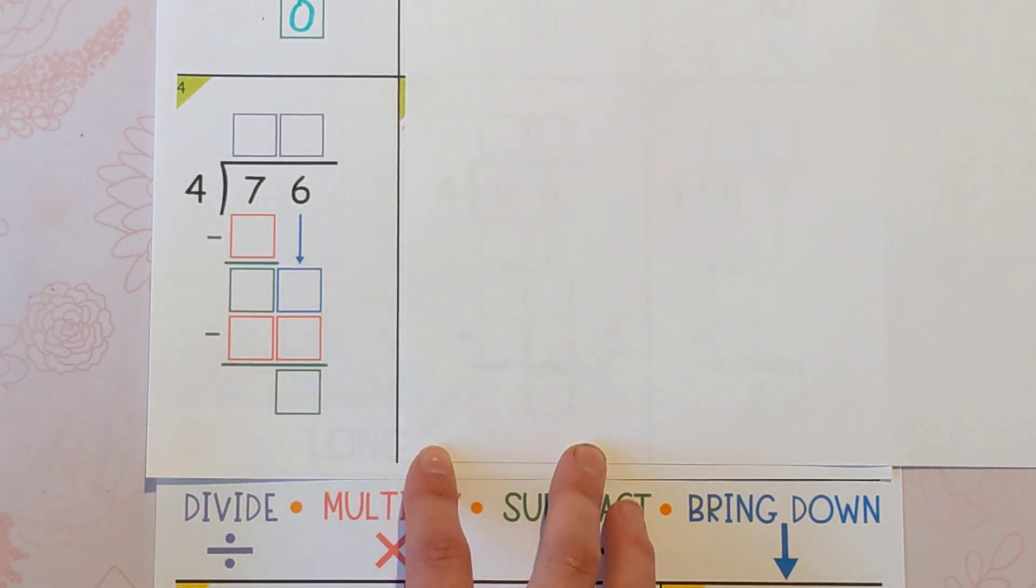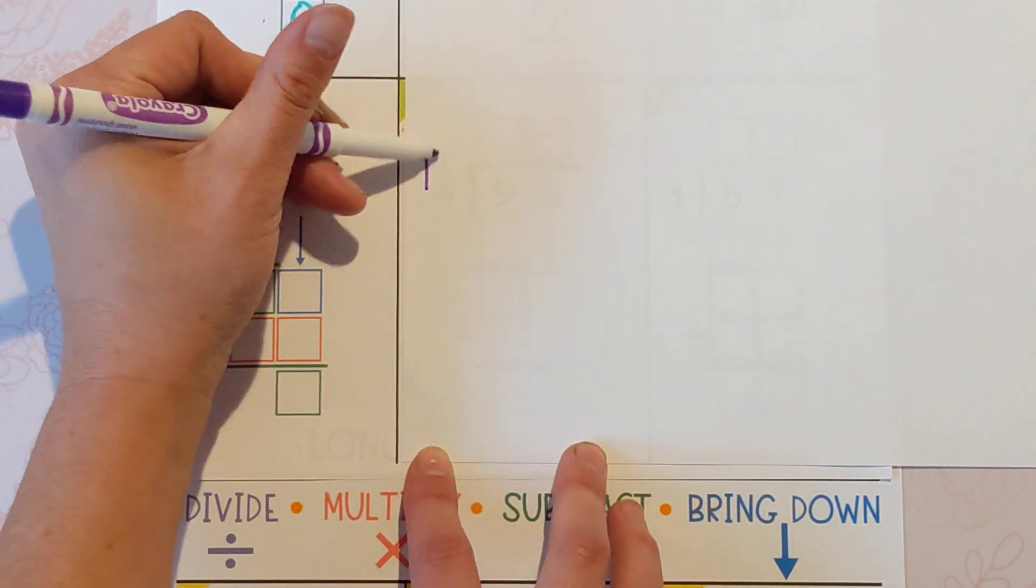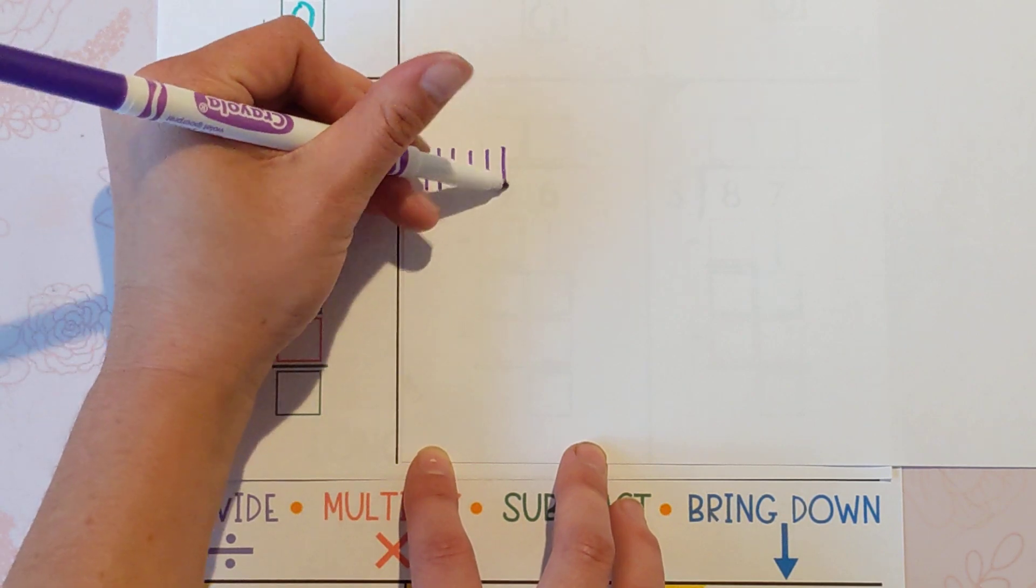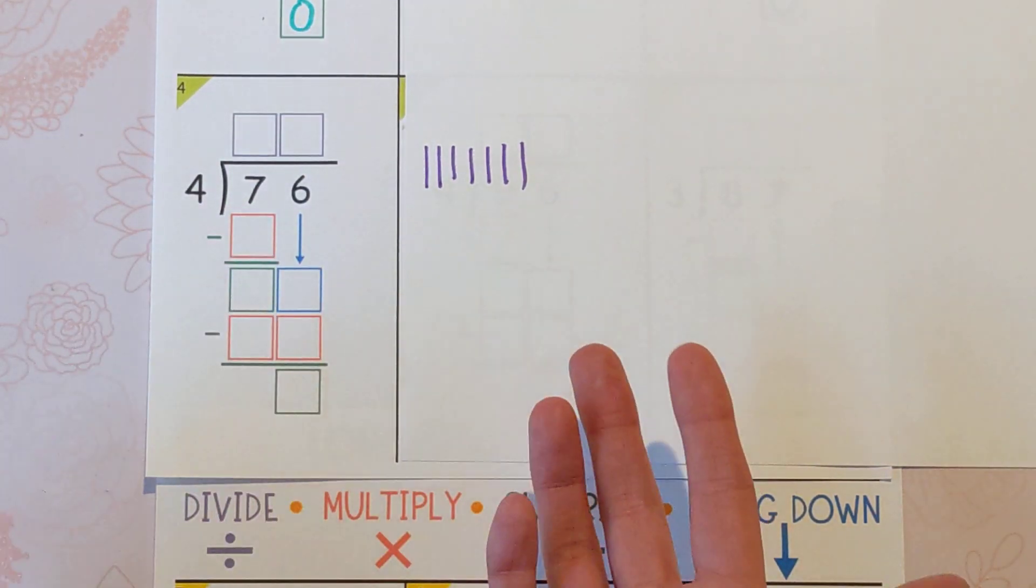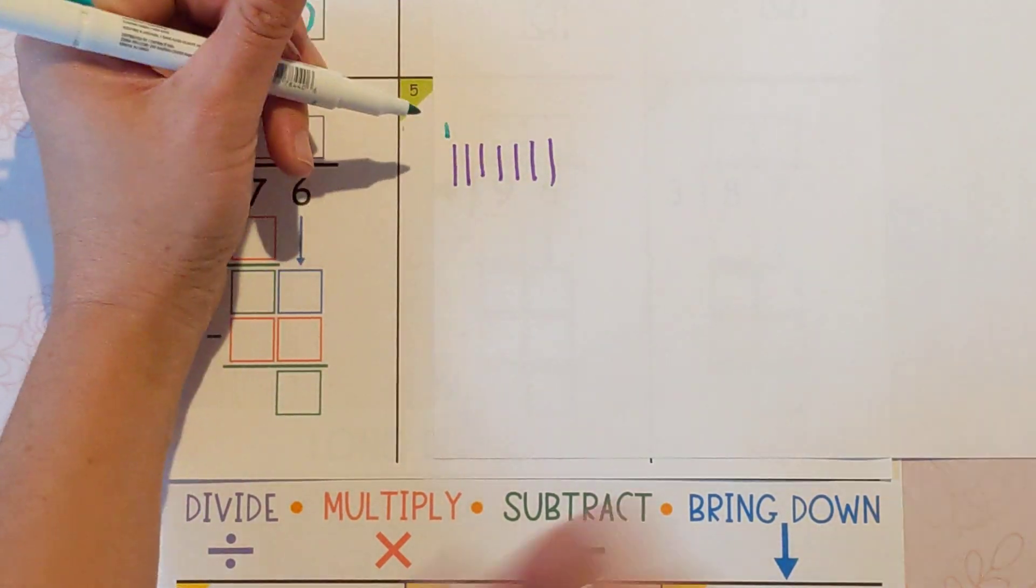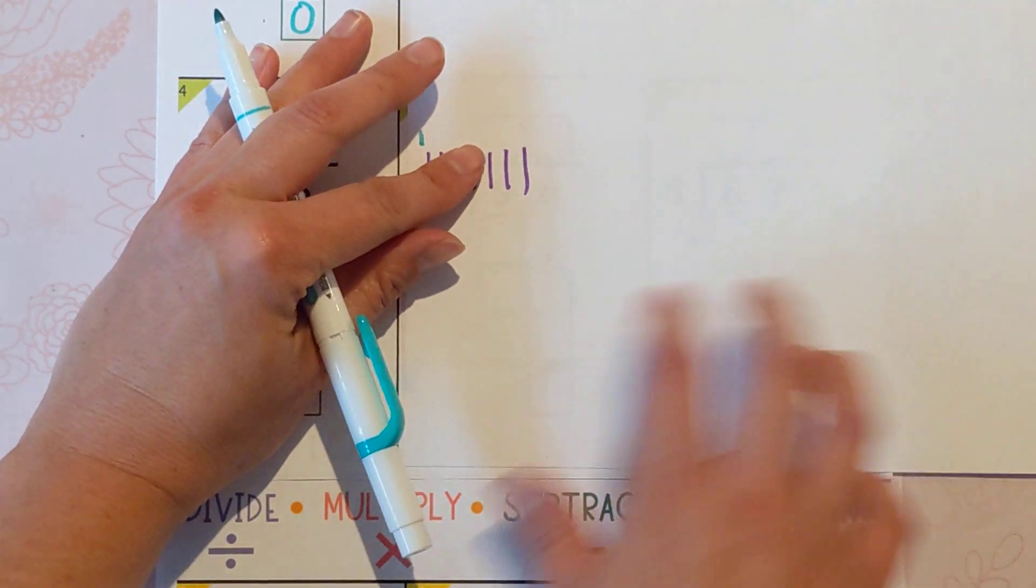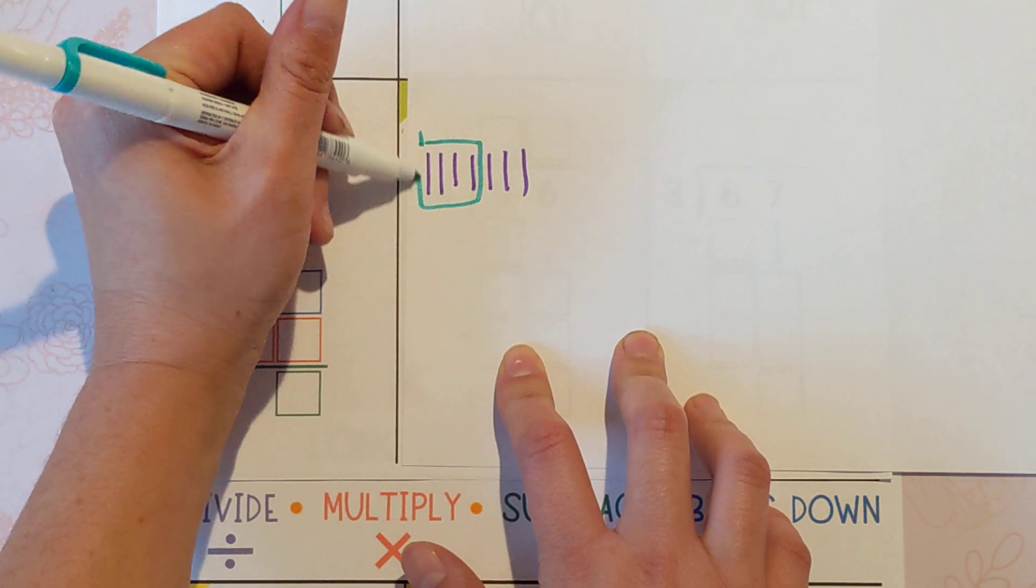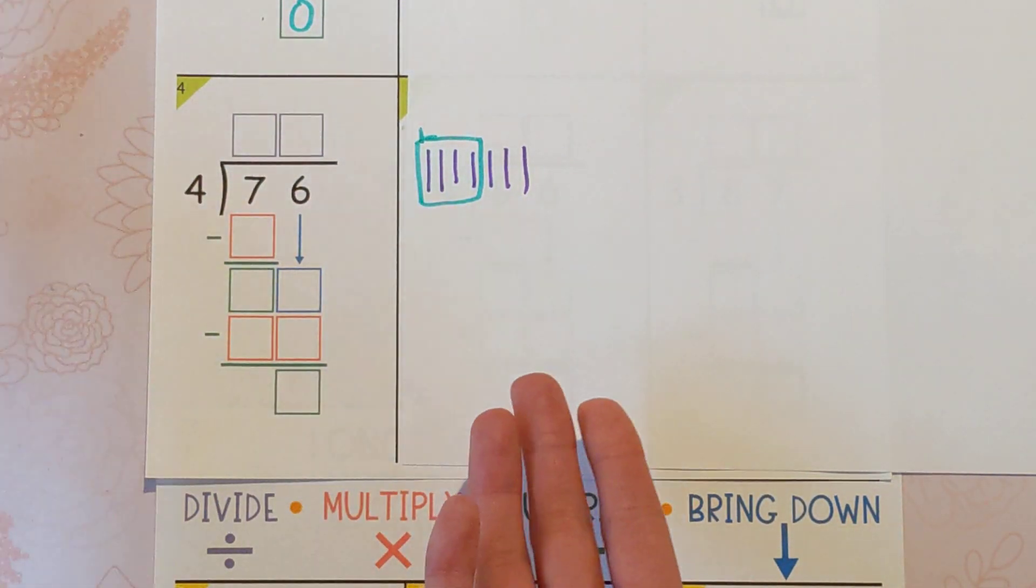And we're using that four always, because that's the thing we're dividing it into. So seven divided by four, or a better way to think of it is, how many times can four go into seven? So if I have seven, how many groups of four can I make? Well, I can only make one group of four.